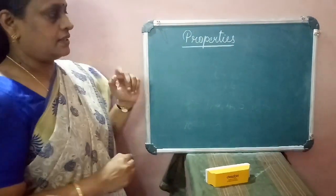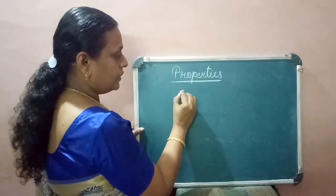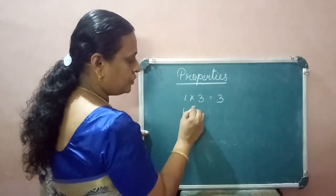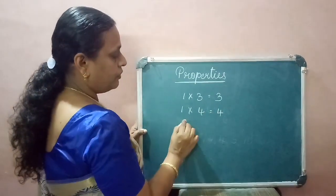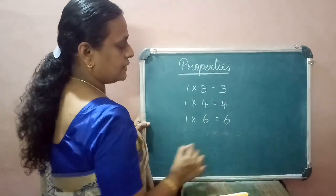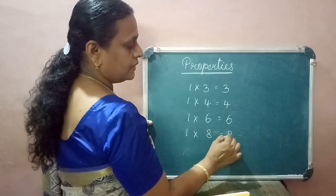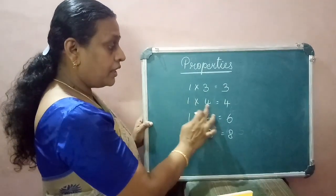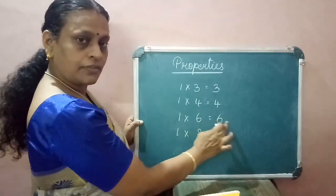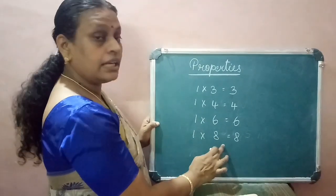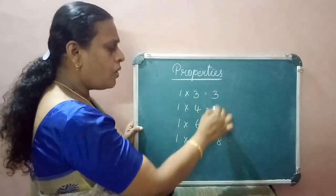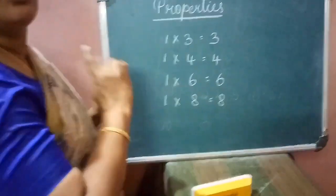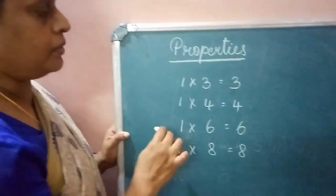Consider the multiplication table: 1 × 3 = 3, 1 × 4 = 4, 1 × 6 = 6, 1 × 8 = 8. So 1 and 3 are factors of 3, 1 and 4 are factors of 4, 1 and 6 are factors of 6, 1 and 8 are factors of 8. That means for all numbers, 1 is a factor. So the first property is: 1 is a factor of every number.